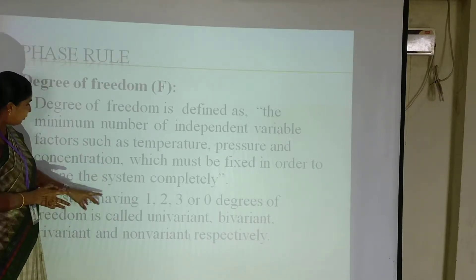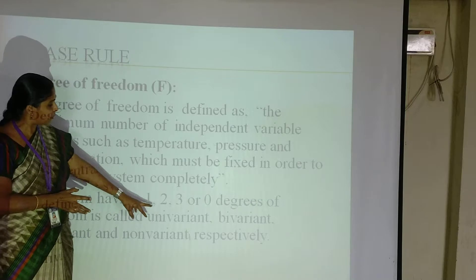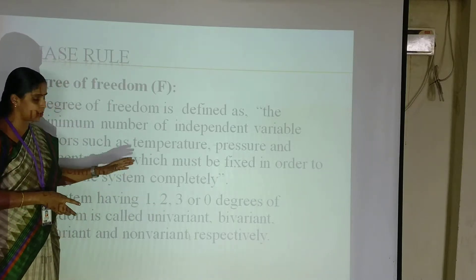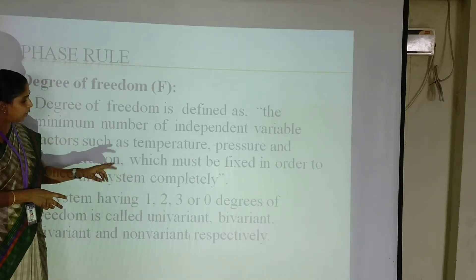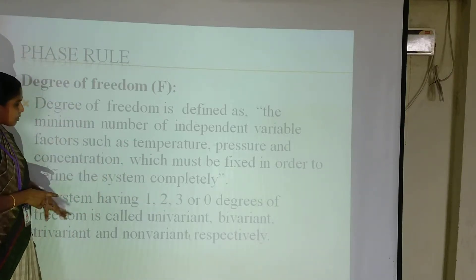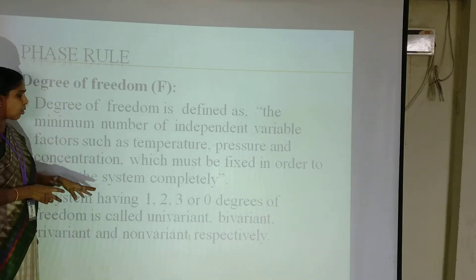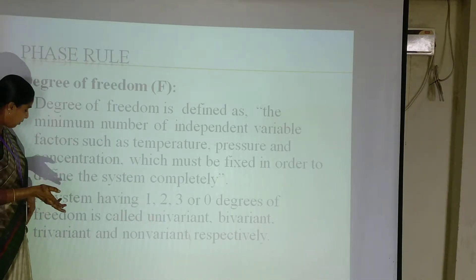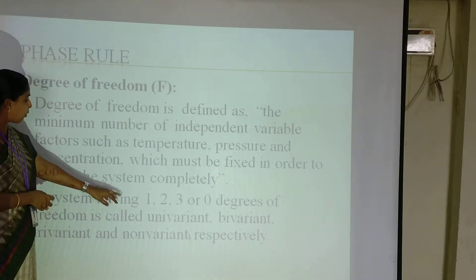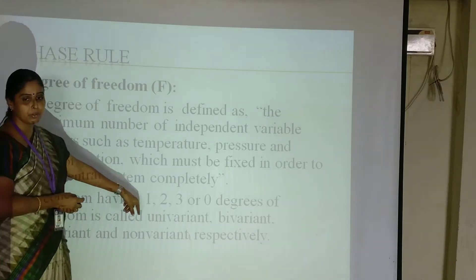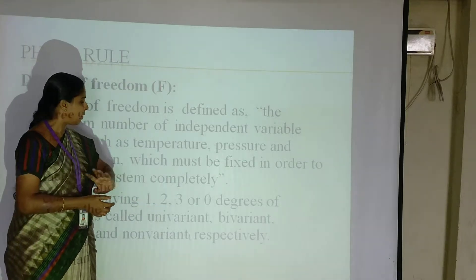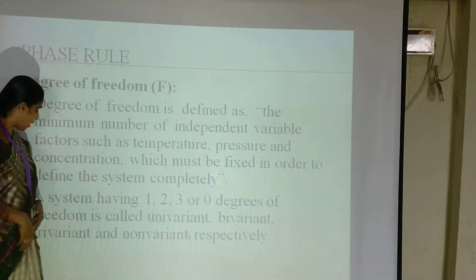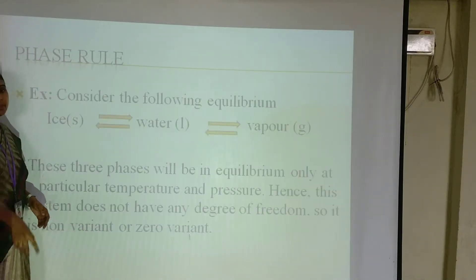The degree of freedom can be 0, 1, 2, or 3. If the degree of freedom is 0, it is called non-variant or invariant. If it is 1, it is called univariant. If it is 2, it is called bivariant. If it is 3, it is called trivariant.